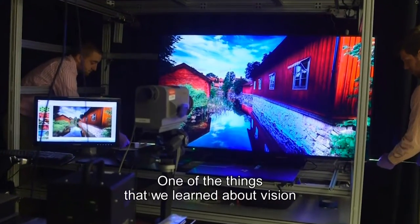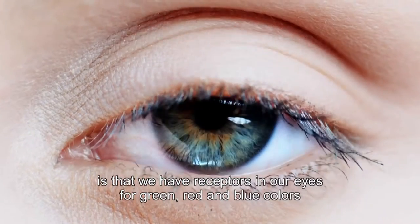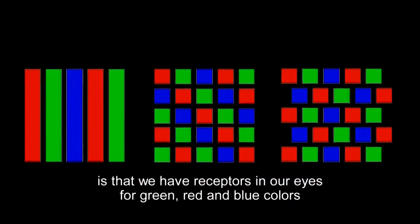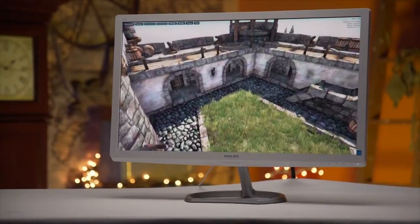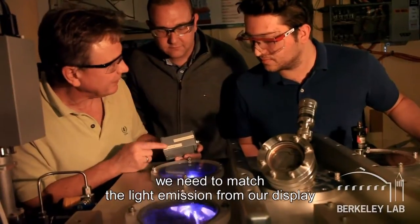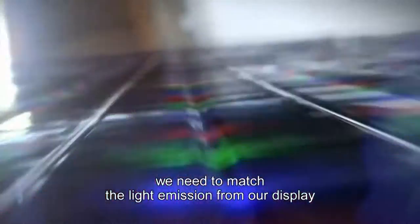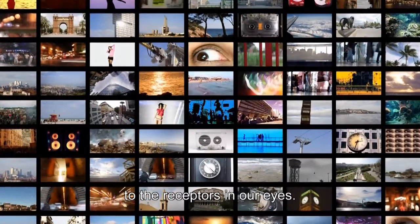One of the things that we learn about vision is that we have receptors in our eyes for green, red and blue colors and if we want a really high quality display we need to match the light emission from our display to the receptors in our eyes.